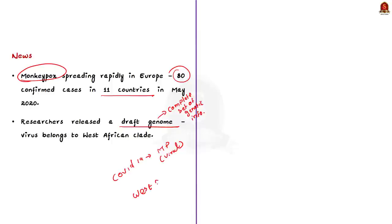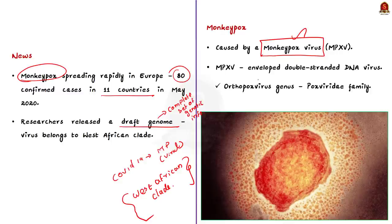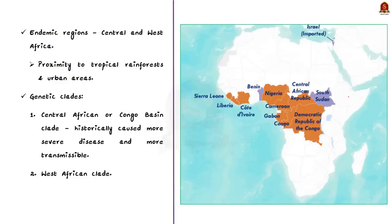We have heard about chickenpox and smallpox — now what is this monkeypox? Monkeypox is caused by the monkeypox virus, an enveloped double-stranded DNA virus. It belongs to the orthopoxvirus genus of the Poxviridae family. It primarily occurs in Central and West Africa, mainly in proximity to tropical rainforests. Nowadays, it has started appearing in urban areas as well.